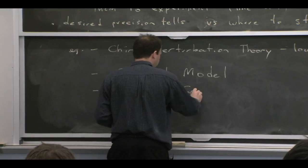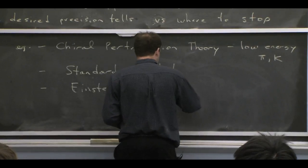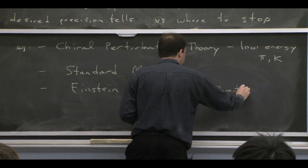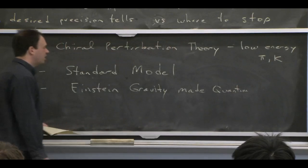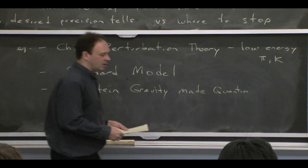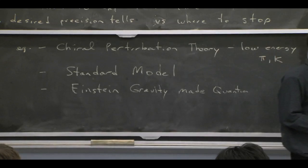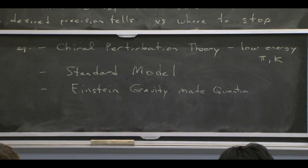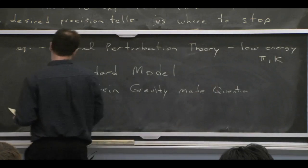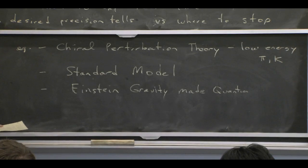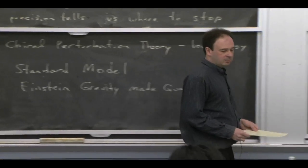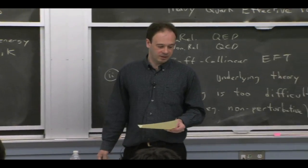Another example is quantum gravity. If you take Einstein gravity and make it quantum, and you allow yourself to expand — saying you're only interested in low-energy physics — you can write down an infinite number of operators and renormalize that theory order by order in those operators. So it's also an example of something you can treat from this effective field theory paradigm.